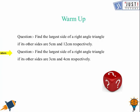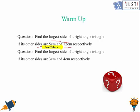Assuming that you have done it, now we can discuss the answer. We need to find the largest side of a right angle triangle if its other sides are 5 cm and 12 cm. The square of 5 is 25 and the square of 12 is 144. Adding them together gives 169, which is the square of 13. So the answer is 13 cm, which is the largest side.